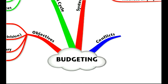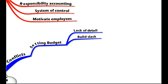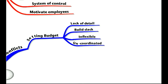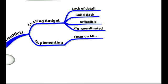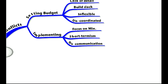However, budgeting can lead to some conflicts. During the setting of the budget you could find a lack of detail. A manager may seek to build slack into the budget so they can achieve it more easily. It could be inflexible and unresponsive to changes, or uncoordinated so that different divisions don't know what the other is doing. When implementing the budget, managers may focus only on the minimum they have to do. It can also lead to short-termism, causing managers not to consider the long-term effects. Implementing the budget without communication can also cause problems.